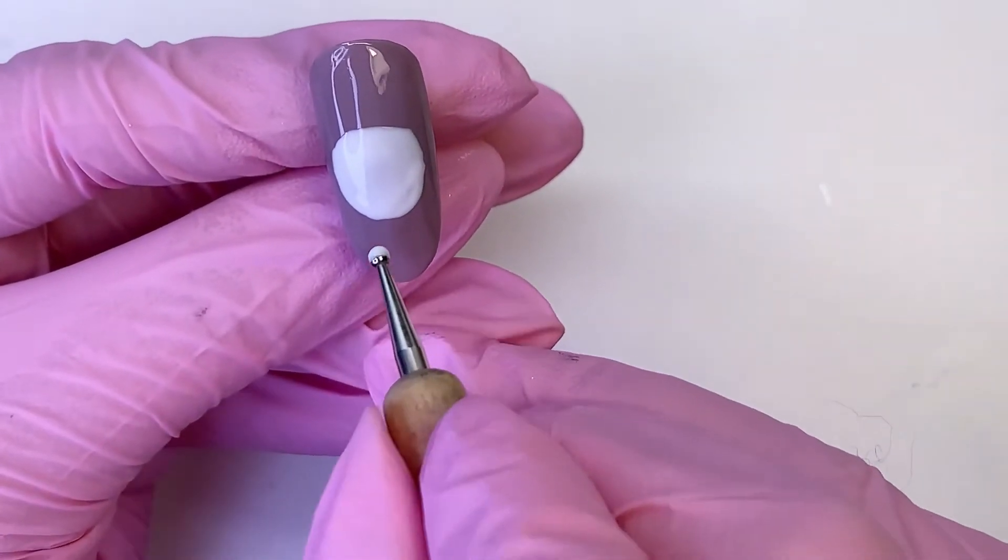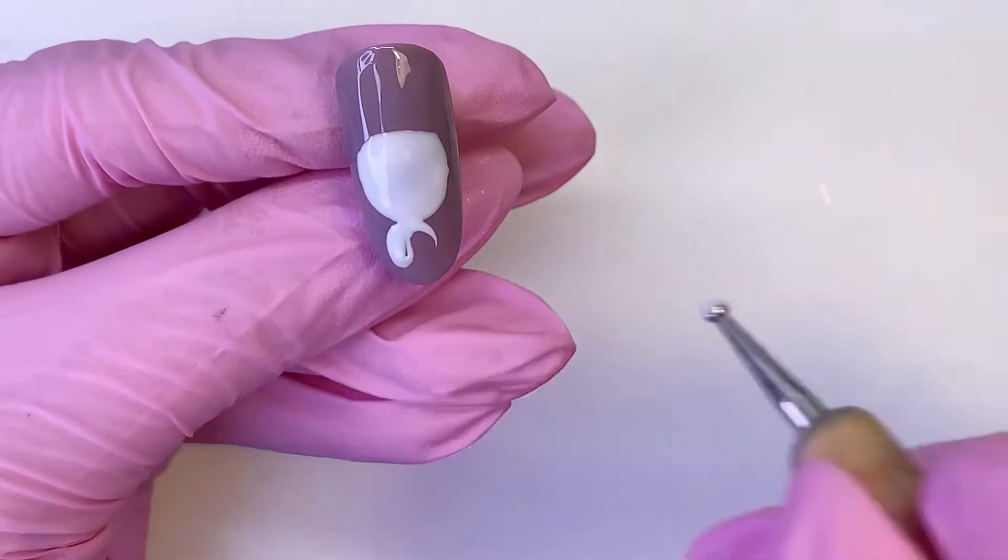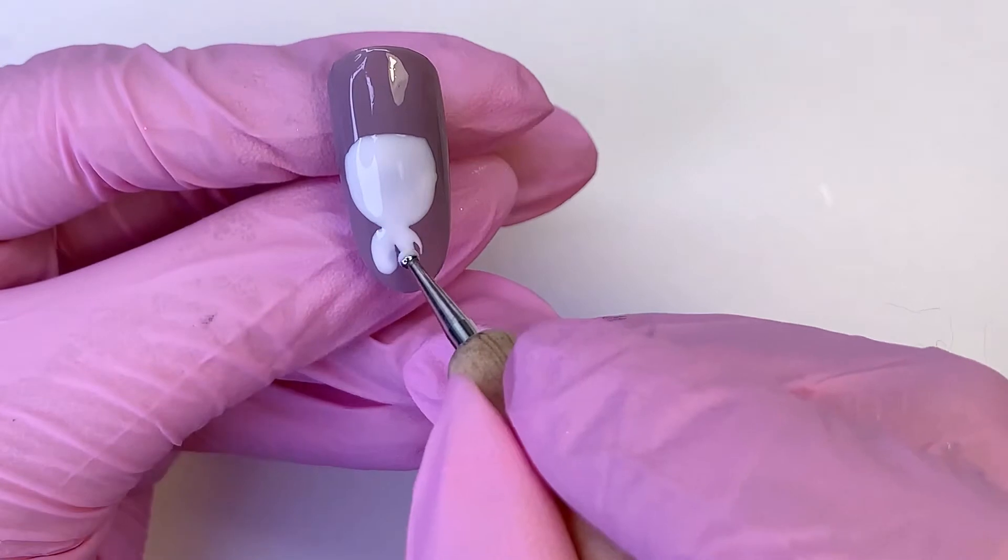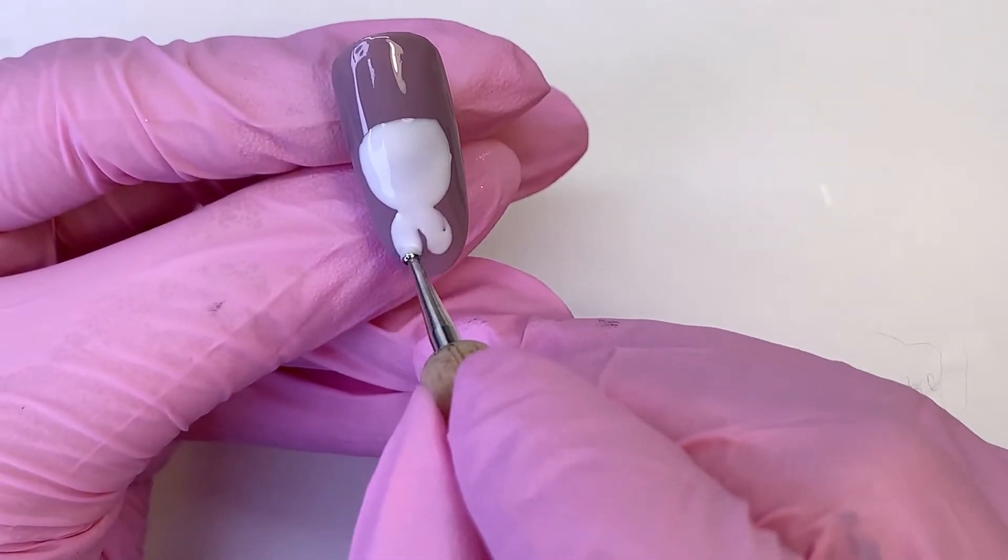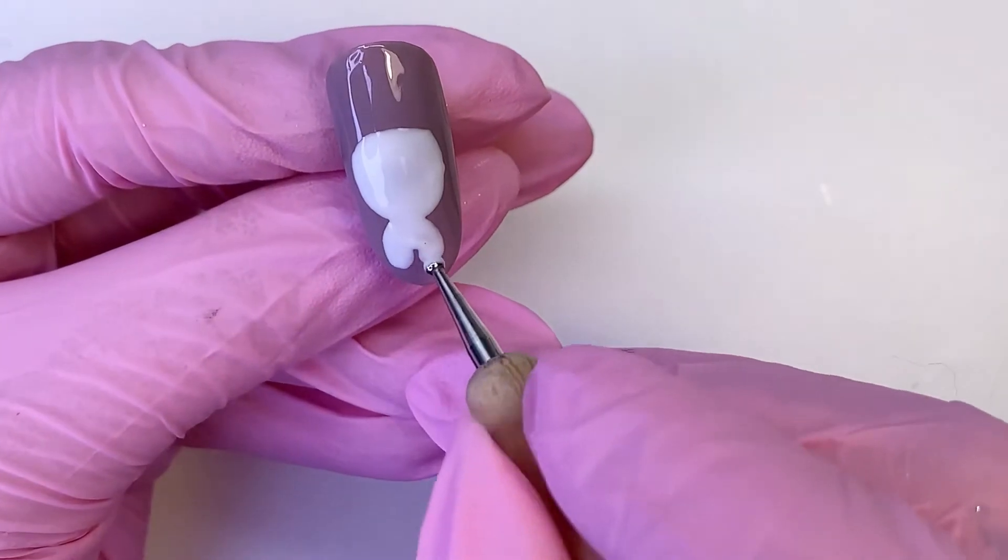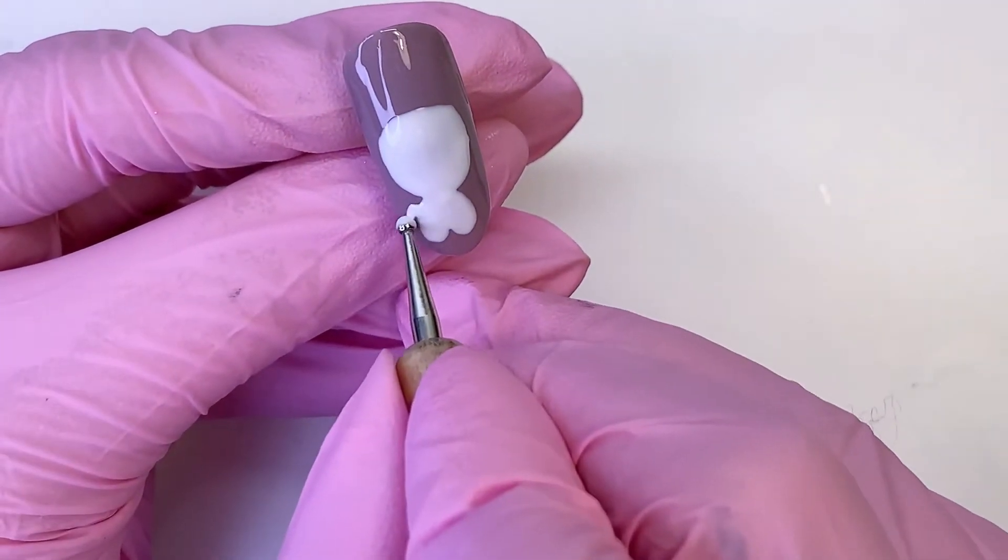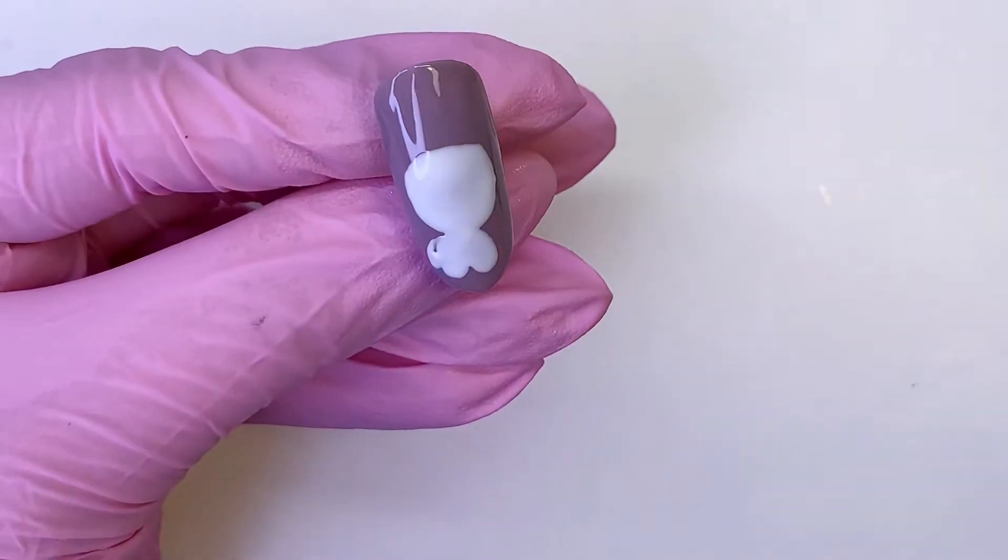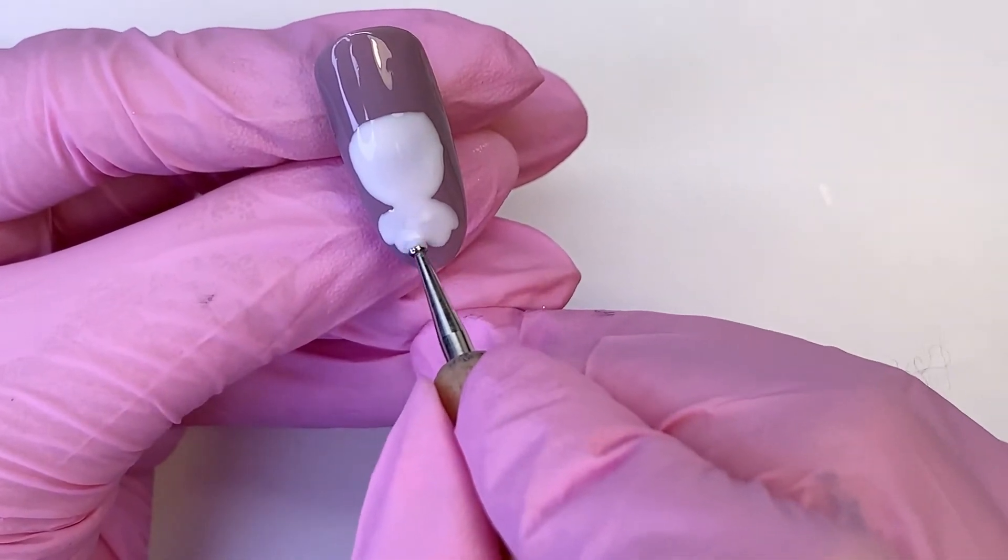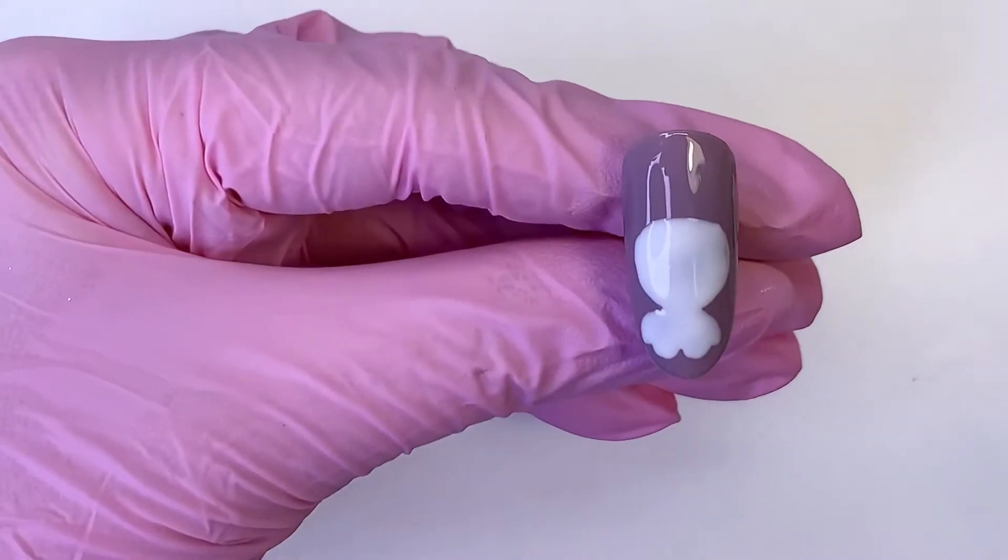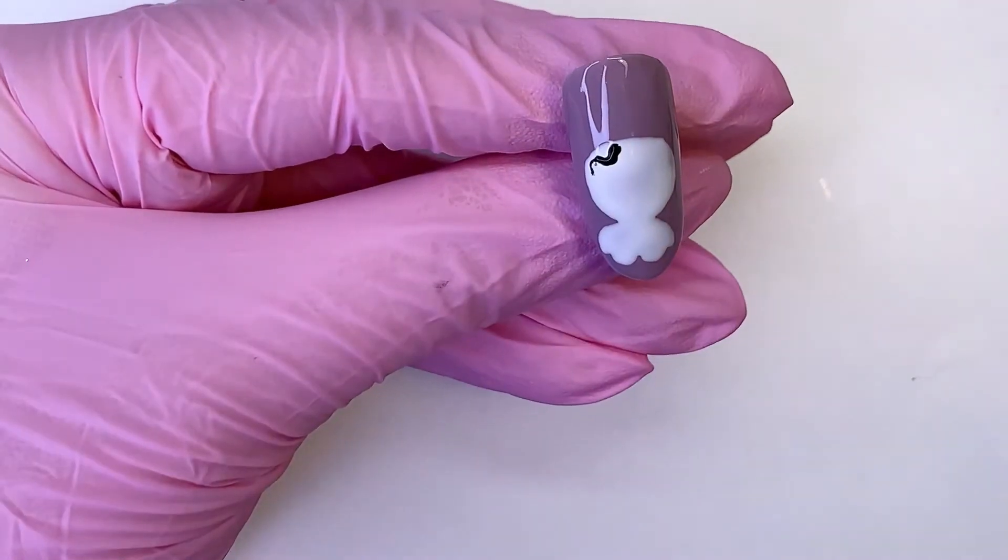And then we will draw the paws and legs. Cure it for 30 seconds, and then we take black gel polish and draw spots.